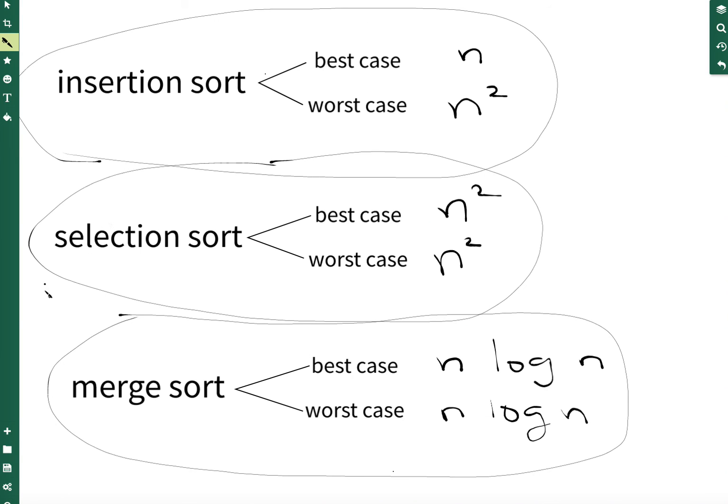And actually, selection is the winner. Insertion is second place. And merge is last place. But for larger number of elements, it's the exact opposite. Merge is first. Insertion is second. And selection is third.